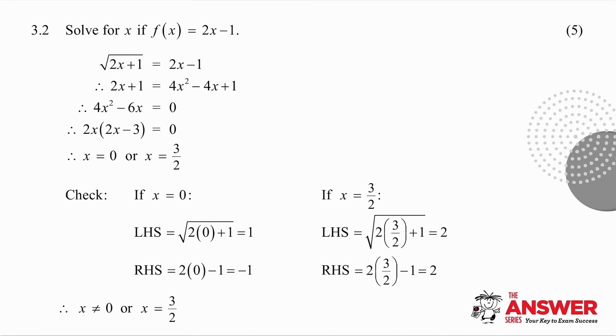Question 3.2 says solve for x if f of x is equal to 2x minus 1. f of x was root 2x plus 1 and I make it equal to 2x minus 1. I have a surd equation, so I square both sides. Remember when I square a binomial I get three terms. Set up your quadratic, factorize and get your two values for x. And then don't forget in a surd equation you have to check your answer back.